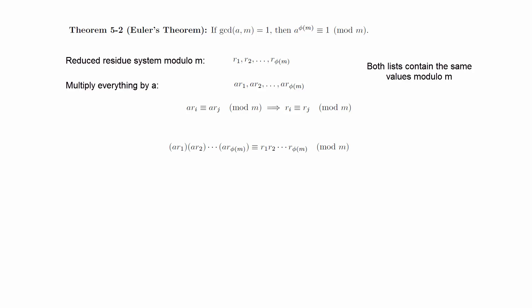This means that if we multiply all the values together modulo m, the products will be the same. Since each of the r sub i is relatively prime to m, we can use the cancellation law to cancel them out of both sides of the equation. On the left side, we have the product of a multiplied by itself phi of m times, and on the right side, we have just 1. And this gives us the desired conclusion.